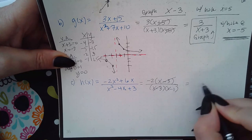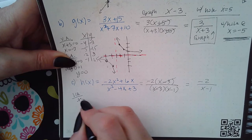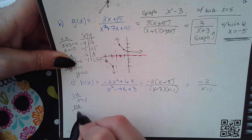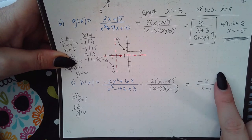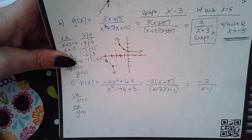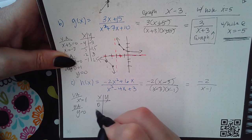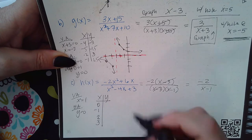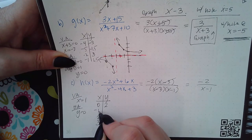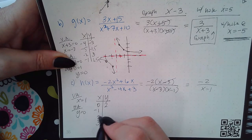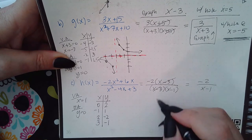For the last problem, after simplifying, the cancelled factor tells me there's a hole; the vertical asymptote is where the remaining denominator equals zero, which gives x equals 1. The horizontal asymptote is at y equals 0 because the numerator degree is 0 and denominator degree is 1. I make a chart with two values to the left of 1 and two to the right, plugging into the simplified function.